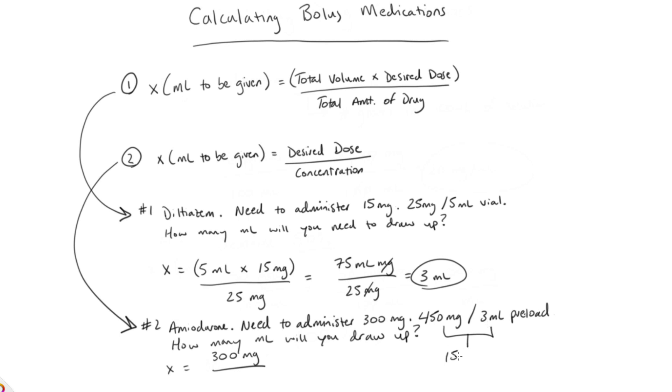When we work this out, we see that 450 milligrams in 3 mLs is really the same as 150 milligrams per mL. When we put that inside of our formula, inside of our equation, we get 300 milligrams up top divided by that 150 milligrams per mL. We cancel out our units, we divide 300 by 150, and we're left with 2 mLs.